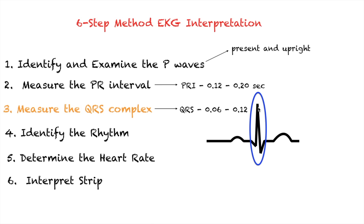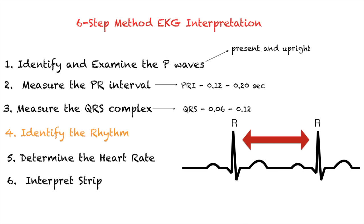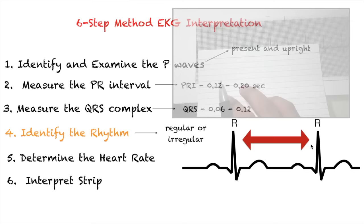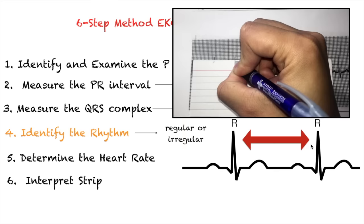Step four: identify the rhythm of your strip — it could be regular or irregular. The way we do this is to measure the distance between R waves. Some people use calipers, but really all you need is an index card. Mark your R waves and march them with the rest of the R waves. If they have the same distance, your rhythm is regular; otherwise, it is irregular.